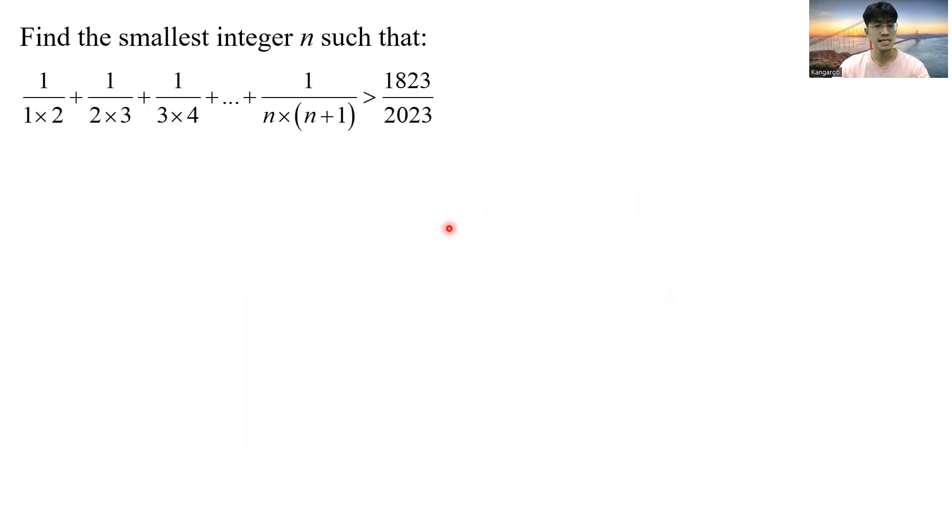Find the smallest integer n such that this equation is valid. First thing first, on the left-hand side I have a lot of fractions, especially involving this n, so there is no way I can calculate this.